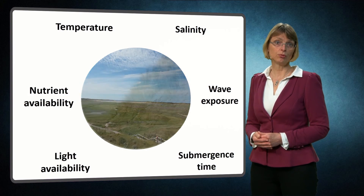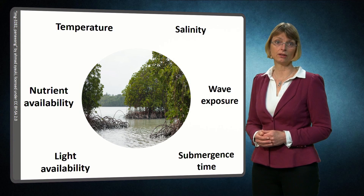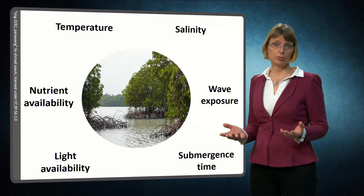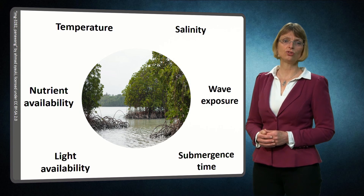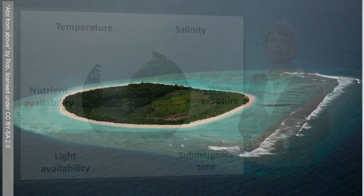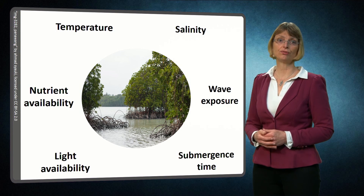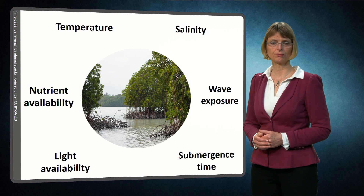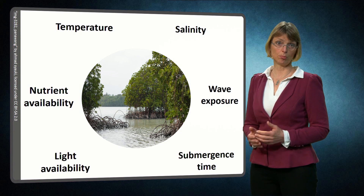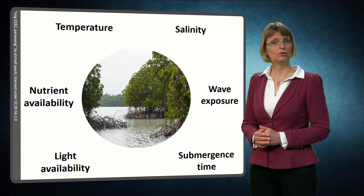These factors determine what type of ecosystem can develop. In practice, this means that not every ecosystem can be created everywhere, simply because we are not able to control all these abiotic factors. However, if abiotic conditions are suitable, we can use ecosystem functions for building with nature. Oyster reefs and coral reefs, for instance, are effective in breaking waves. Seagrass beds, salt marshes and mangrove forests are very effective in protecting sediment against erosion. The appropriate ecosystems to consider in a building with nature design process will depend on both the abiotic boundary conditions and the desired functions of the ecosystems within your engineering design.